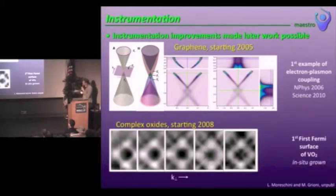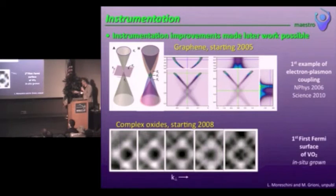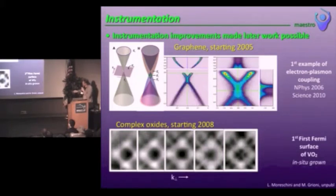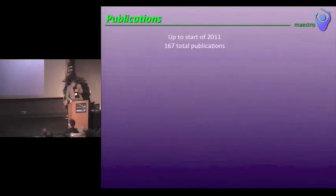The second instrumentation improvement was the ability to grow complex oxides. It started in 2008. And for example, I'm going to show you the Fermi surface of vanadium oxide grown in situ. And this is the K perpendicular variation. It's the first time anyone could take this data because if you grow this crystal in the bulk and cleave it, you don't get a nice enough surface for photoemission.